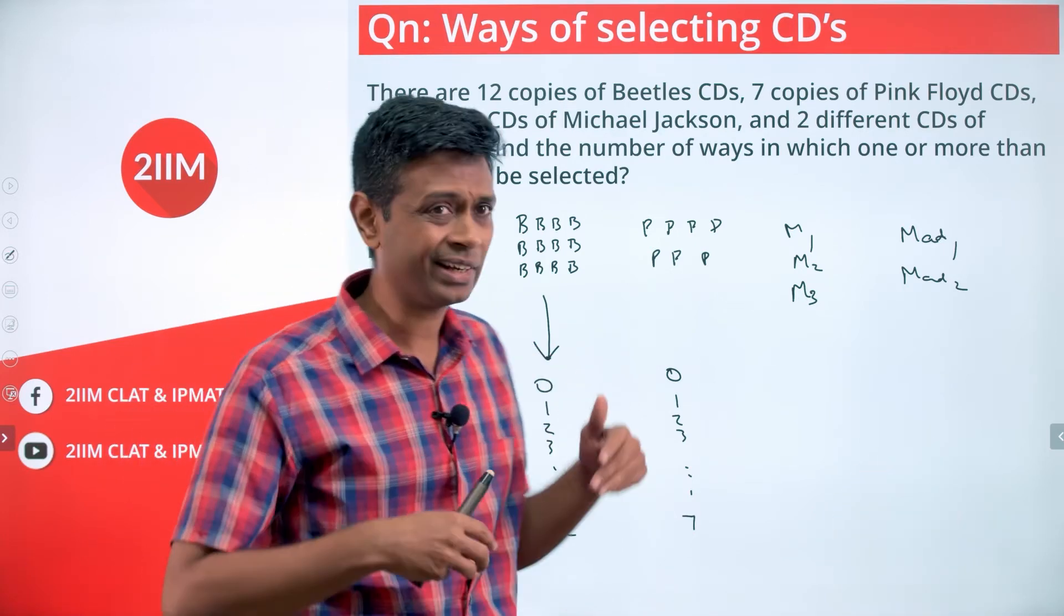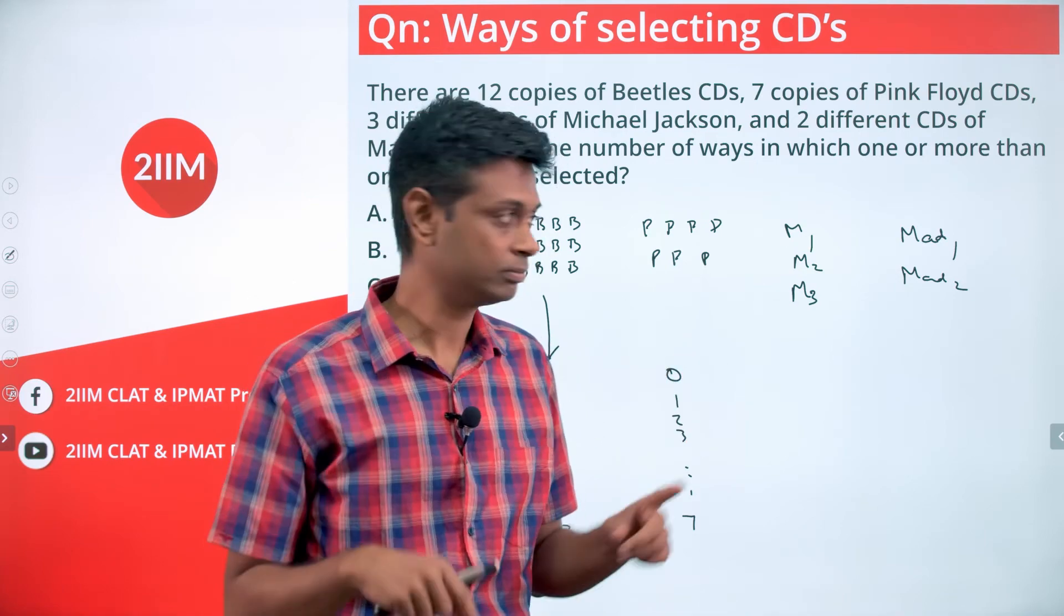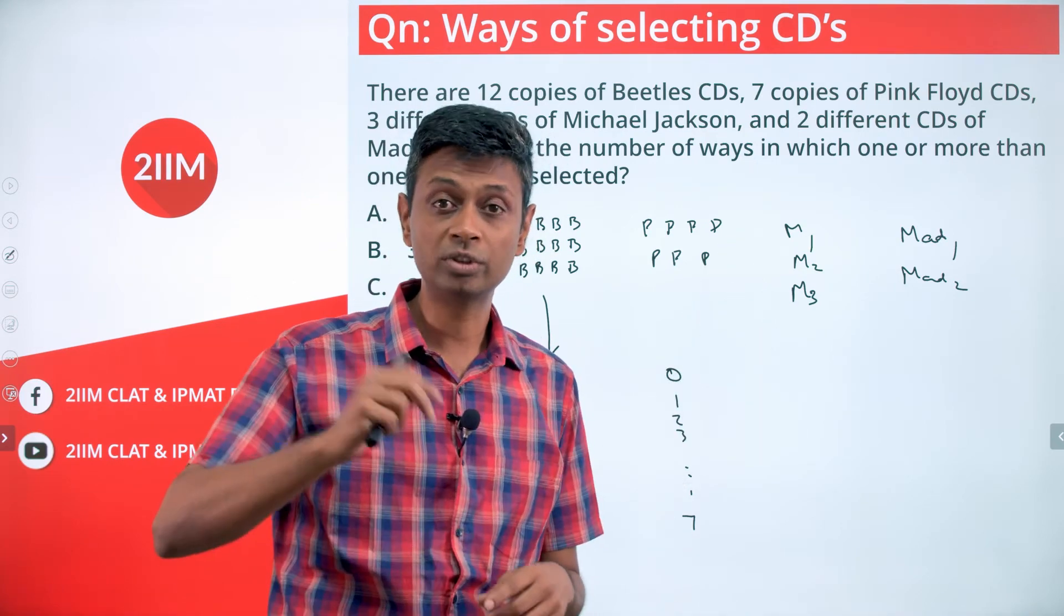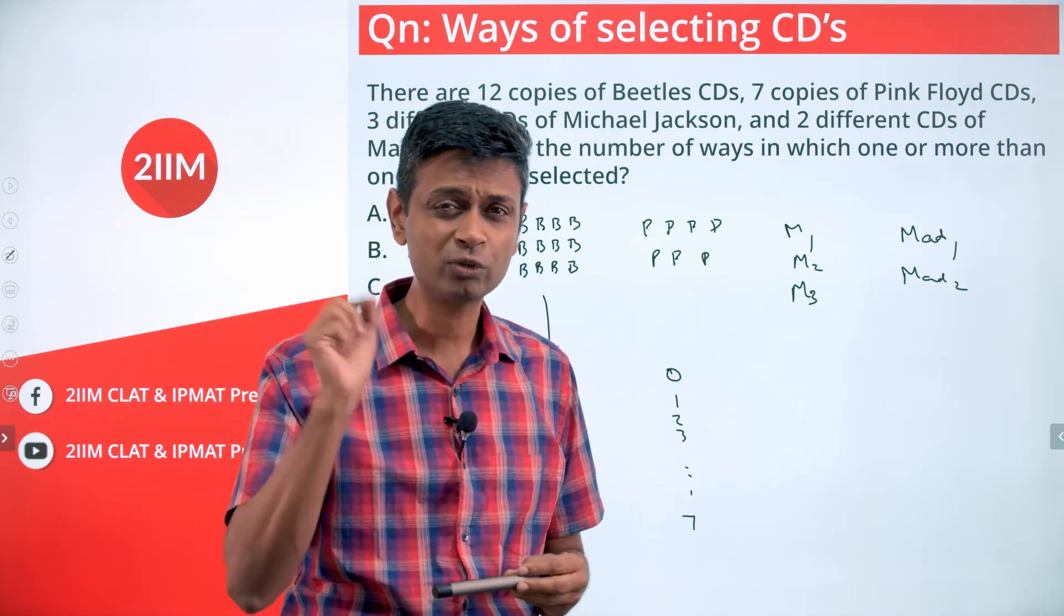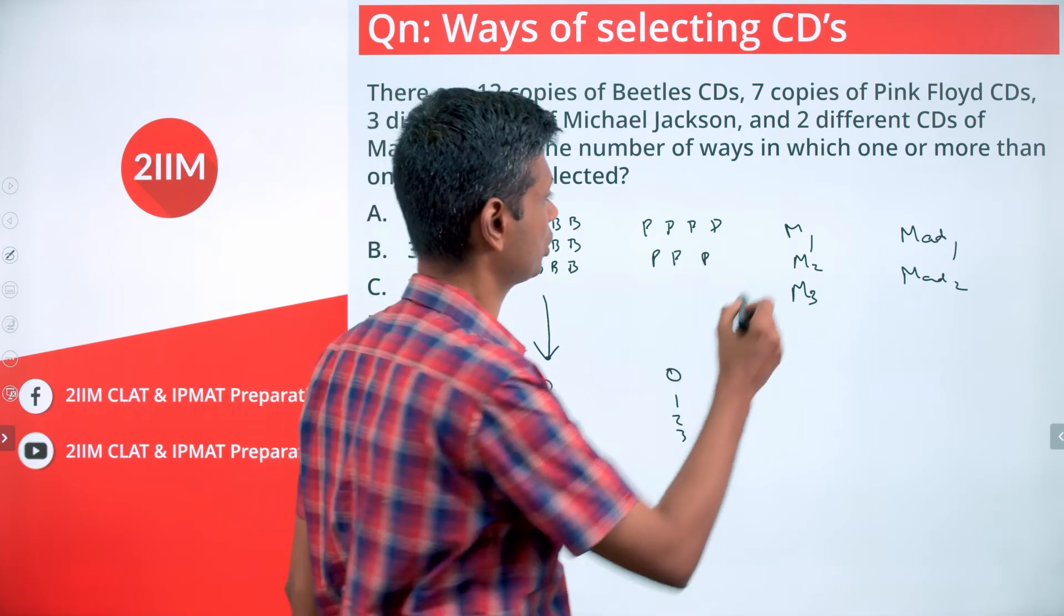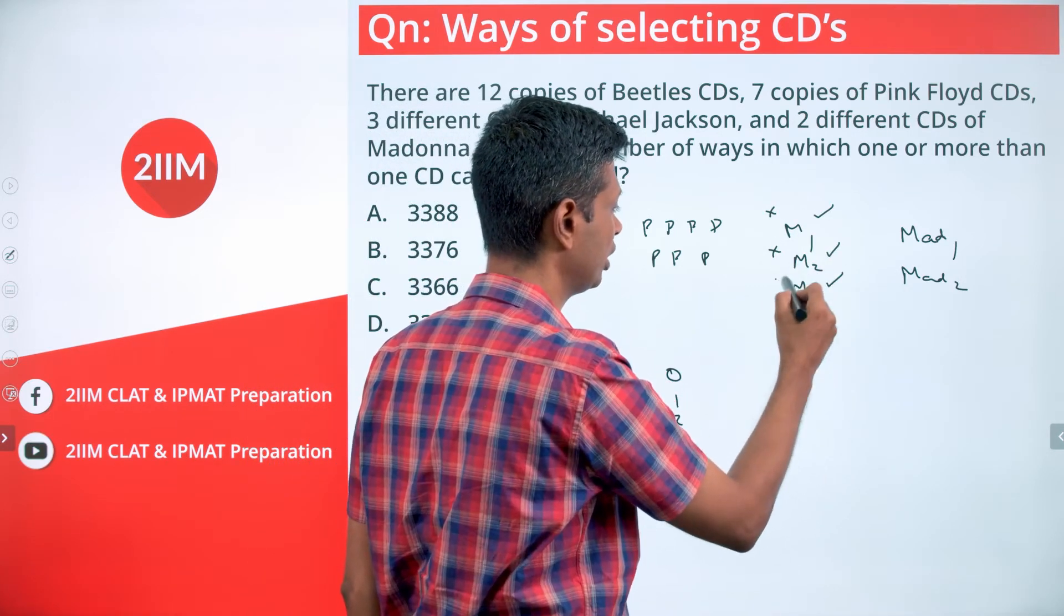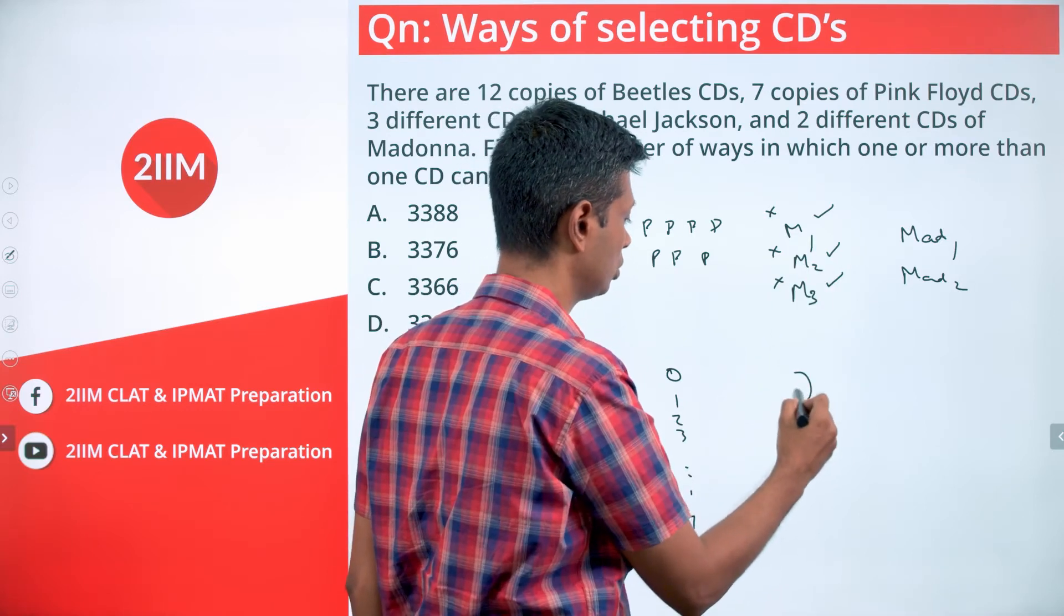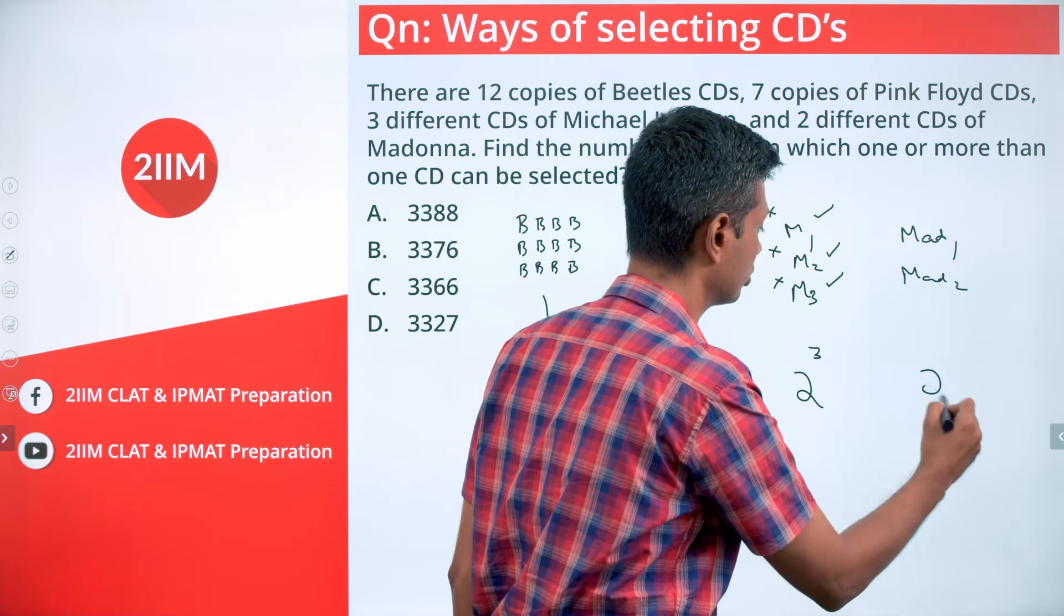So I could select none of them - that is one selection. Or I could select one of them, 3C1, two of them, 3C2, all three of them, 3C3. The other way of thinking about it: M1 is either in or out, M2 is in or out, M3 is in or out - 2×2×2 equals 8. Here there are 2 squared possible selections.